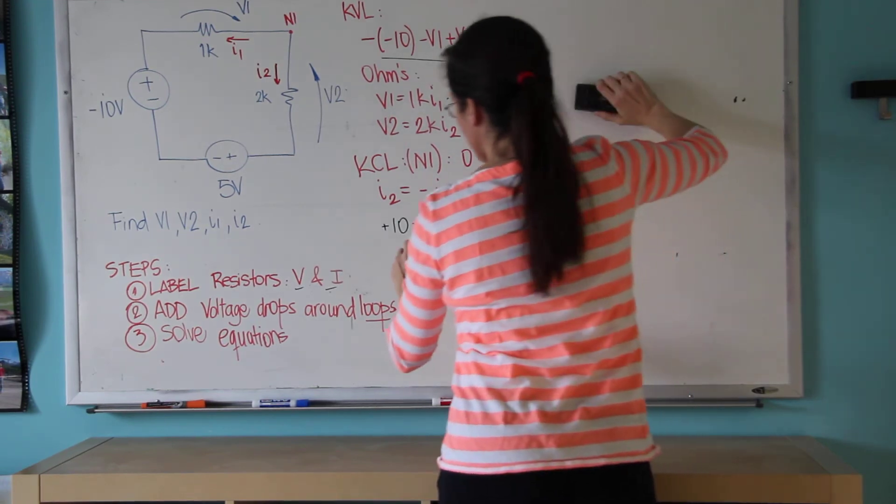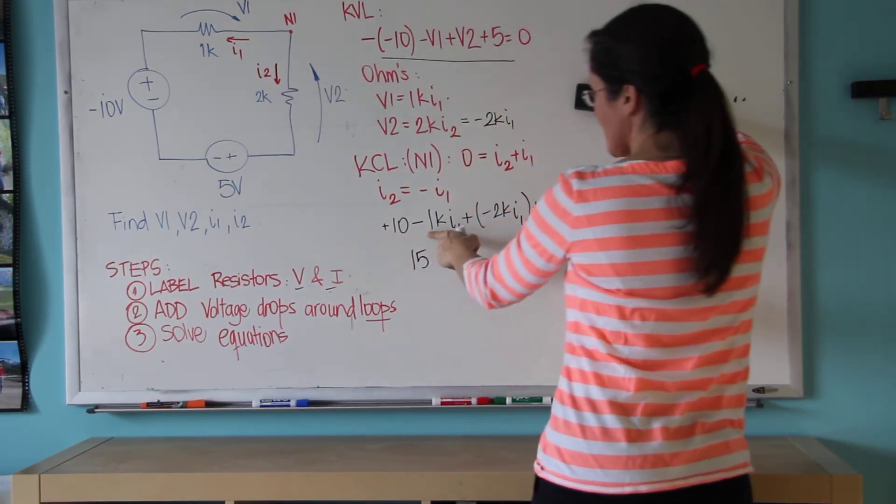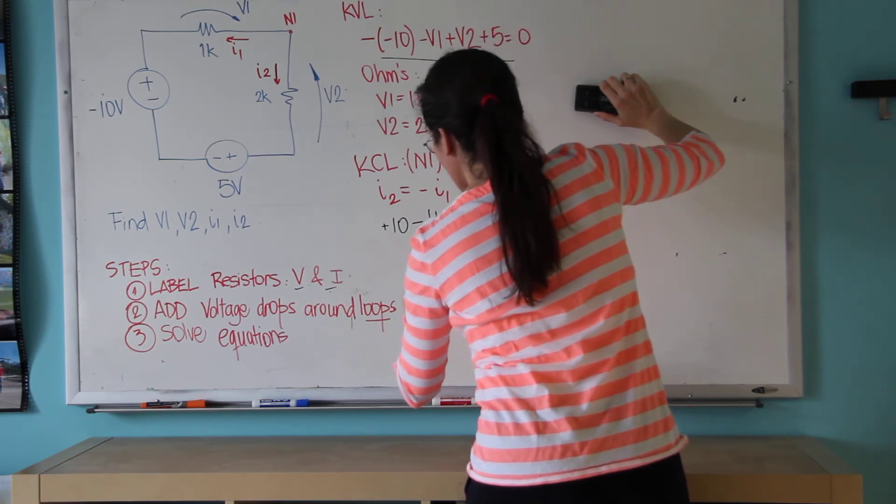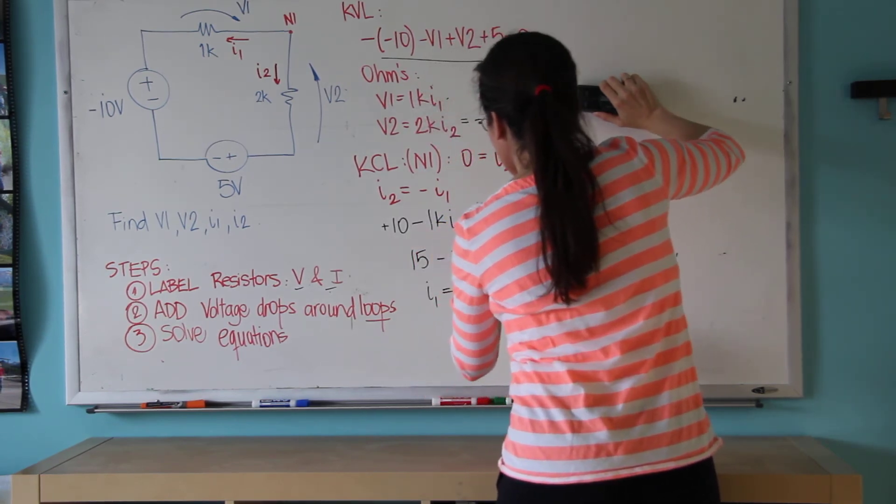10 plus 5 is 15. Minus 1 minus 2 is minus 3K times I1 equals 0.